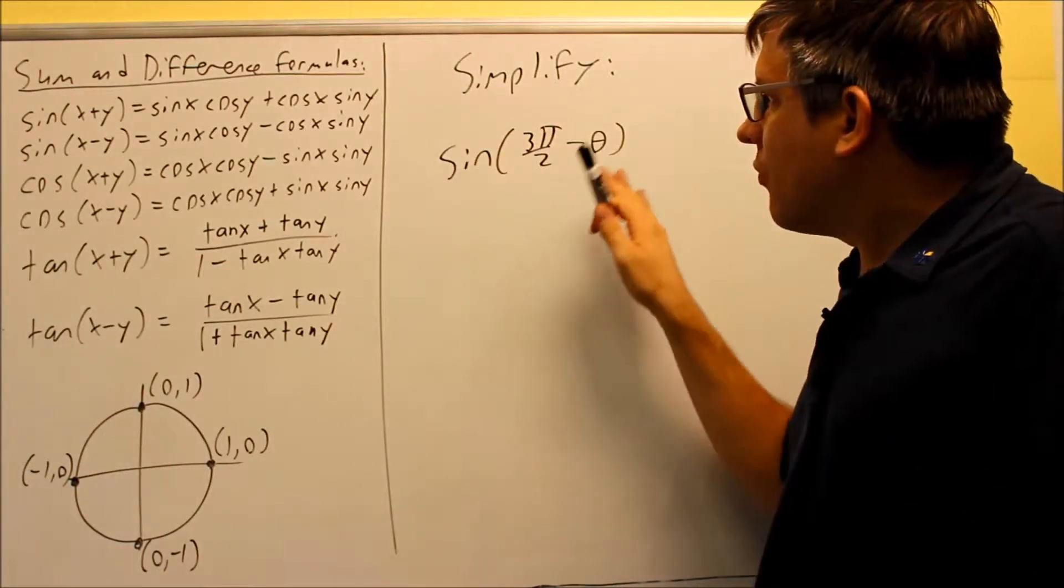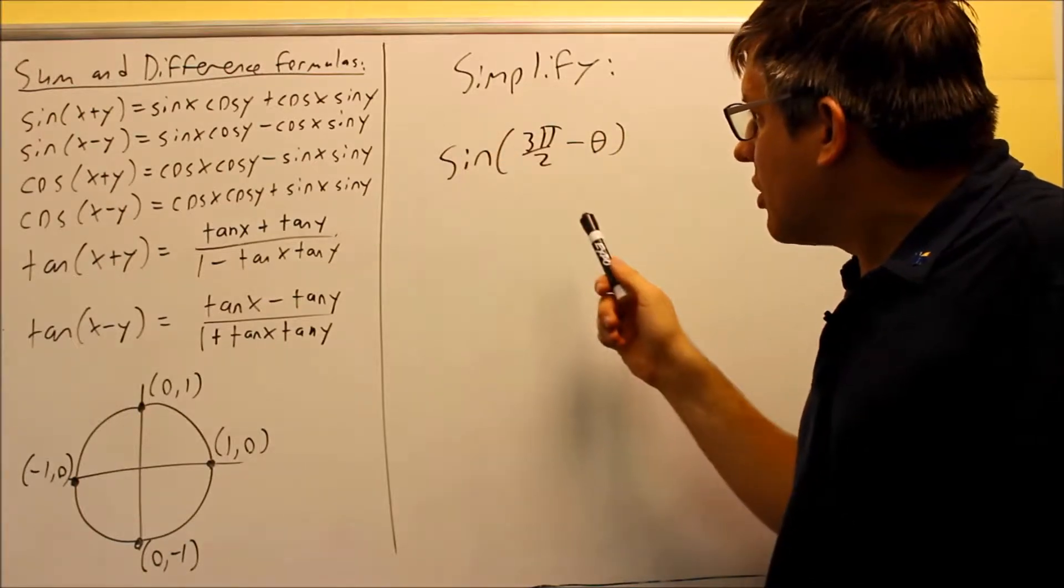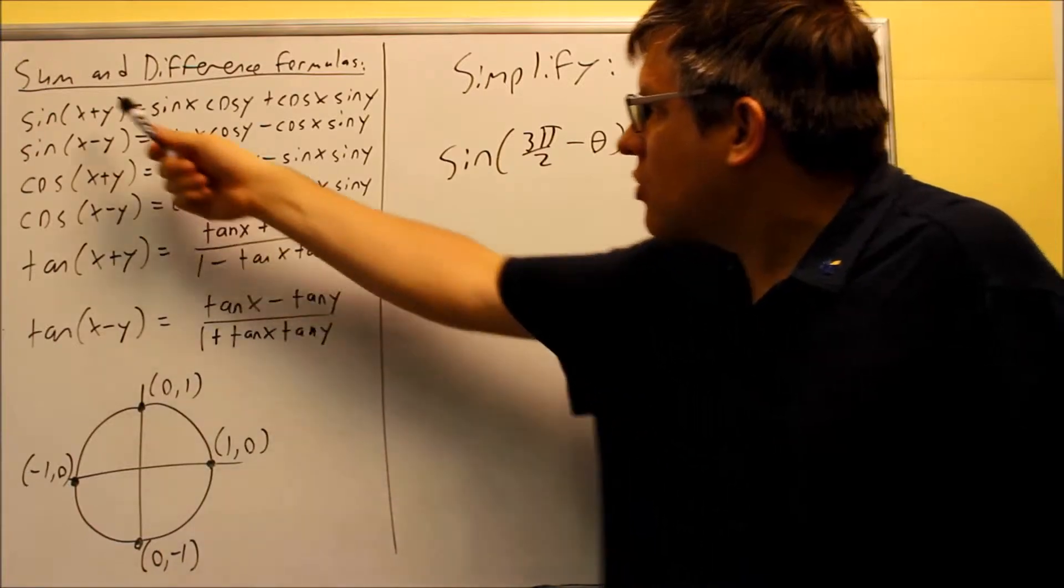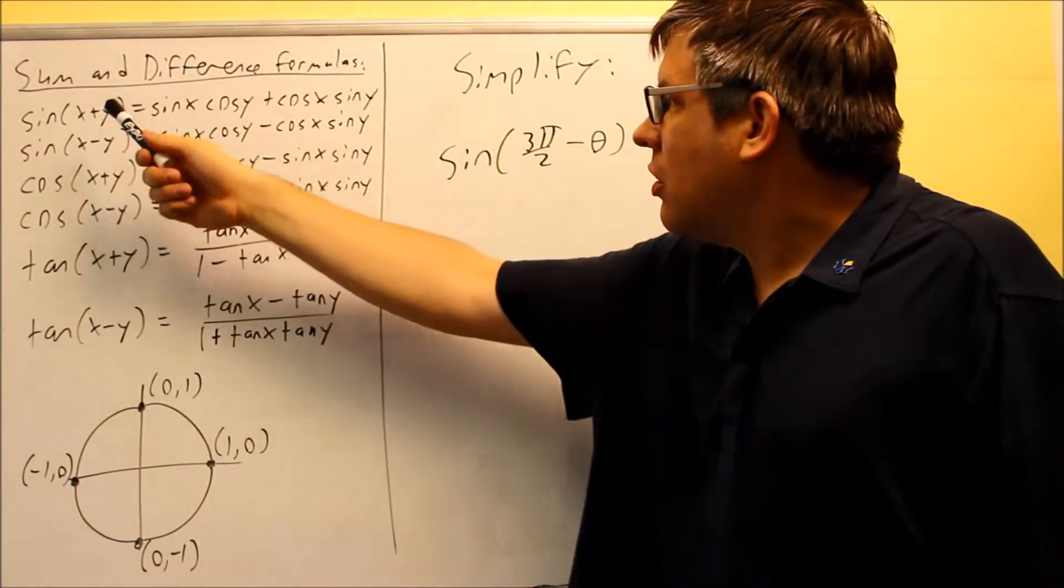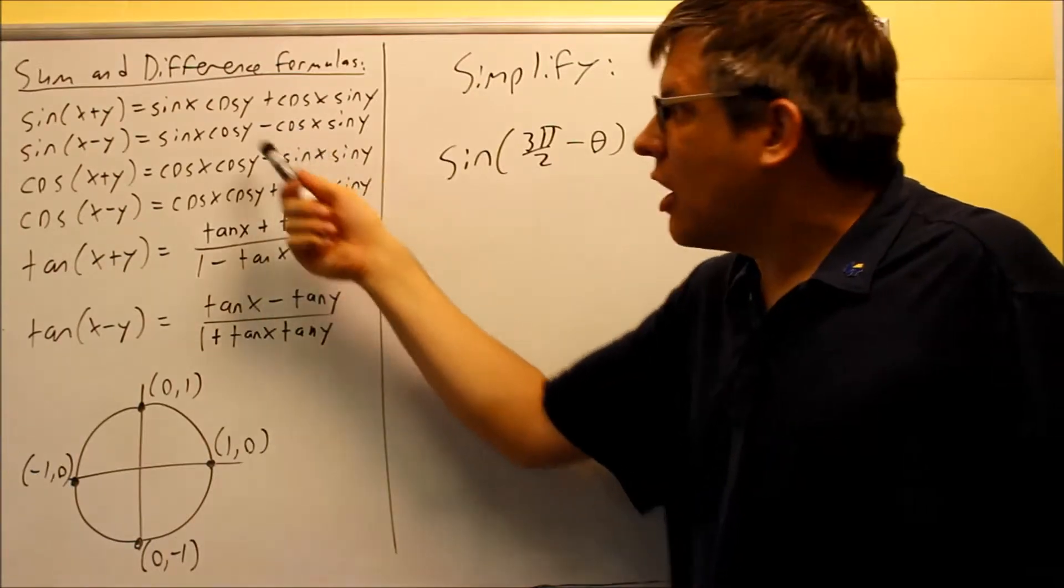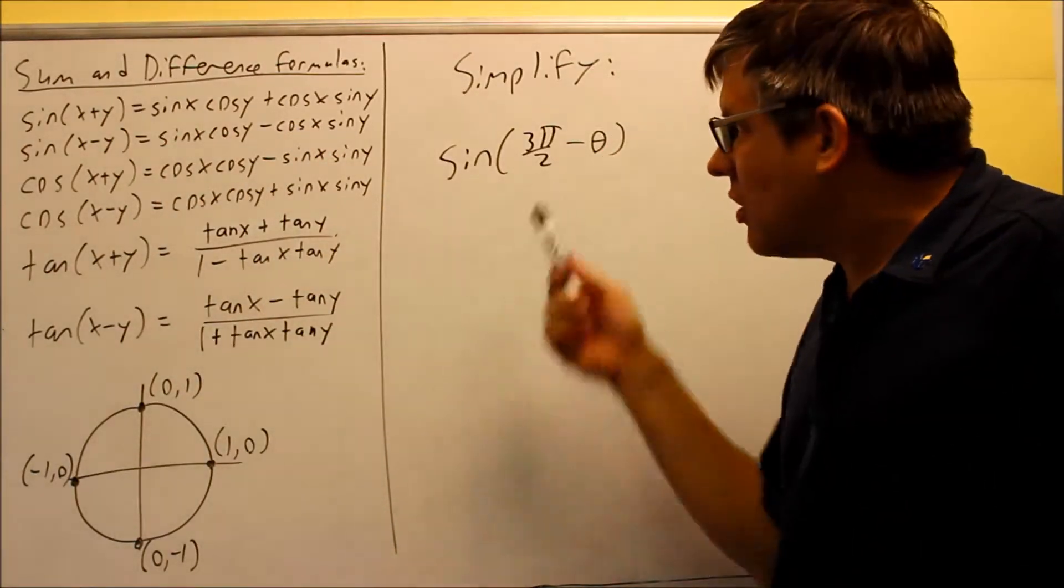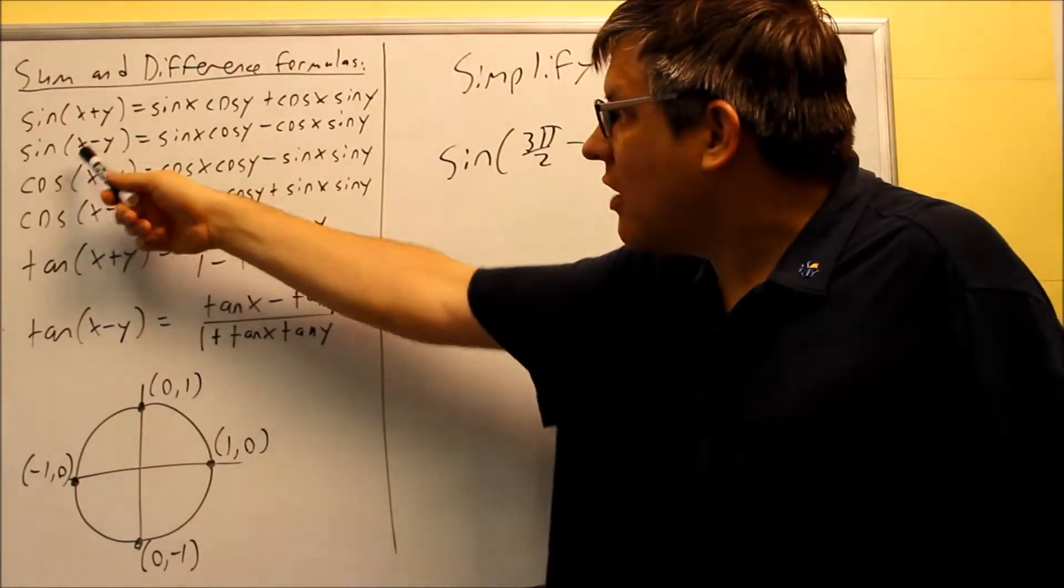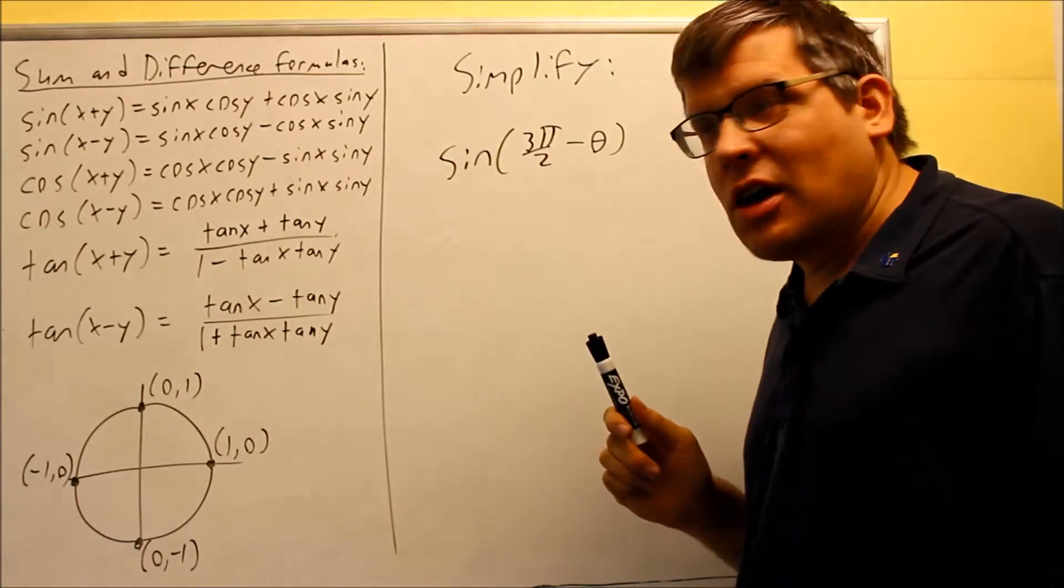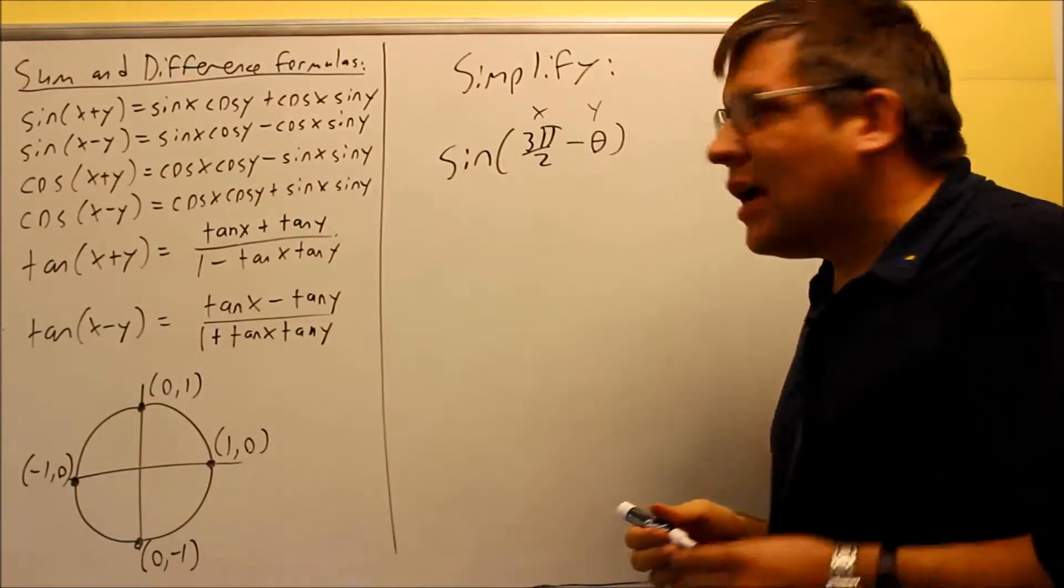So the problem that you'll get in this section, the first couple will look like this, where it'll just say you want to simplify that expression. So the way these formulas work is you can actually start with either end. You can either start with the left-hand side and go to the right-hand side, or you can start with the right-hand side and go to the left-hand side. We'll look at examples that do both. In this case, we're starting with the left-hand side. We want to take this out and expand it to the right-hand side. So what I see here is this is x and y.